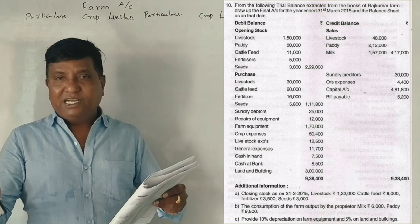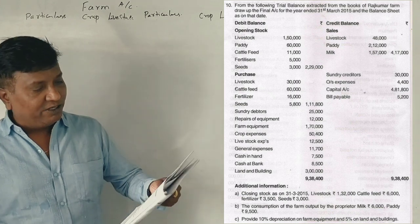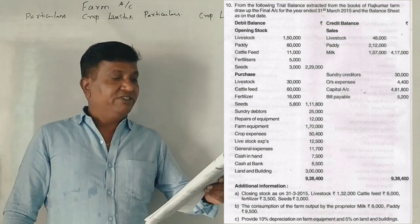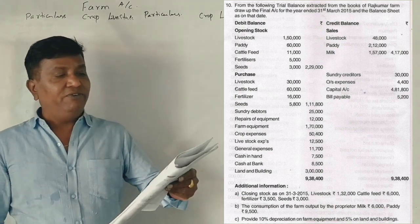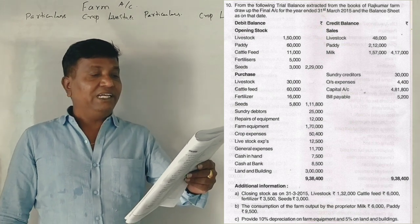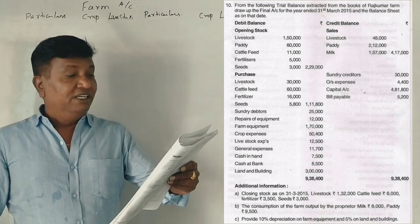Trial balance, debit side. Opening stock: livestock, paddy, cattle feed, fertiliser, seeds. Purchases: livestock, cattle feed, fertiliser, seeds.